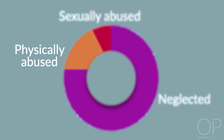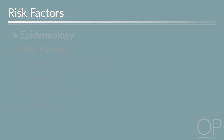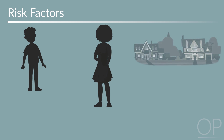Abusive head injury, sexual abuse, psychological maltreatment, and neglect are beyond the scope of this introductory video. Risk factors for child abuse can be categorized into factors affecting the child, the caregiver, and the environment.